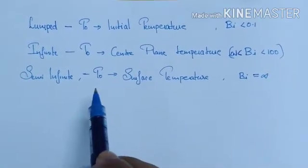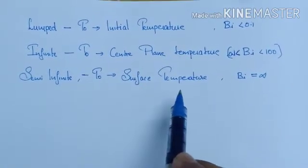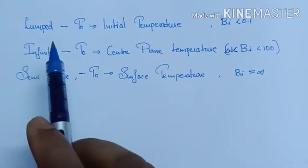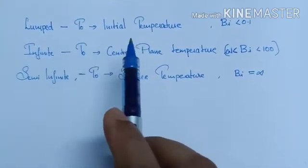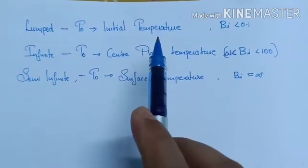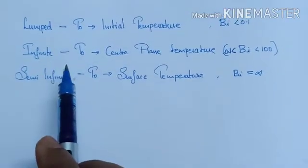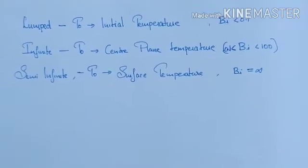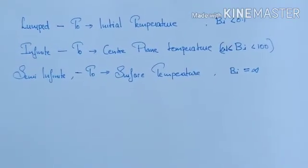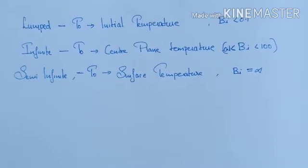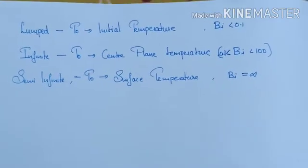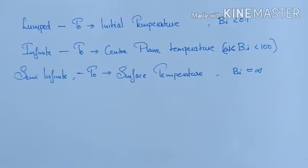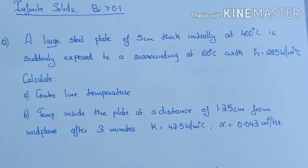So T0 is called the initial temperature for the infinite solid case, referring to the center plane temperature. For semi-infinite solids, T0 is called the surface temperature. Let me now tell you a problem.